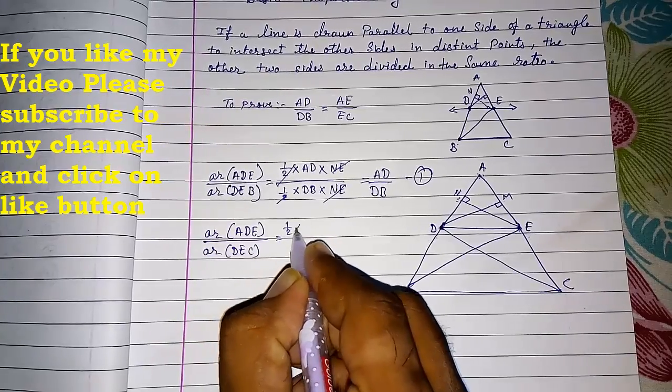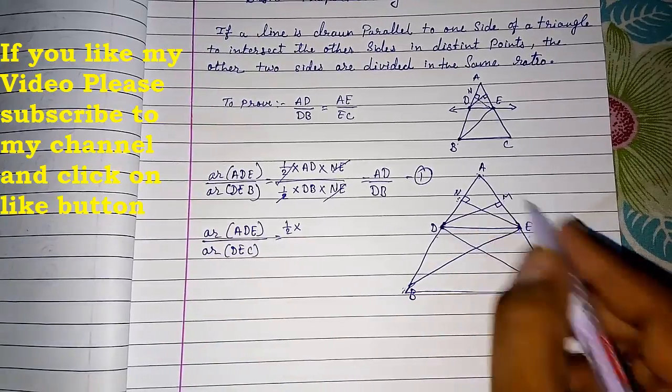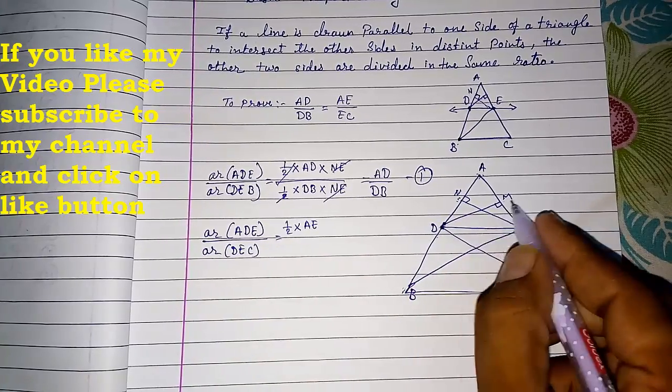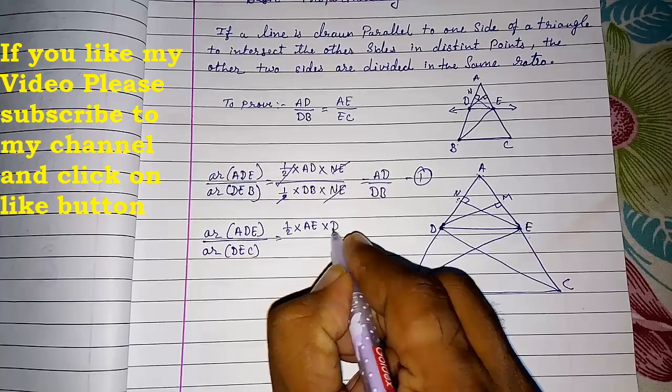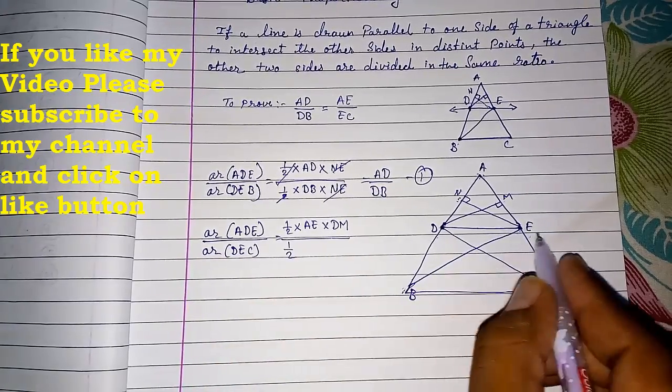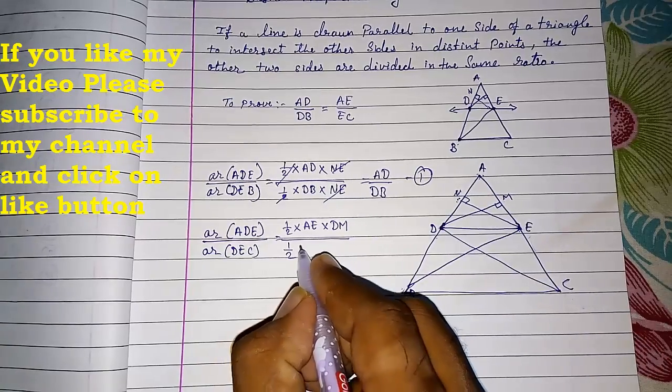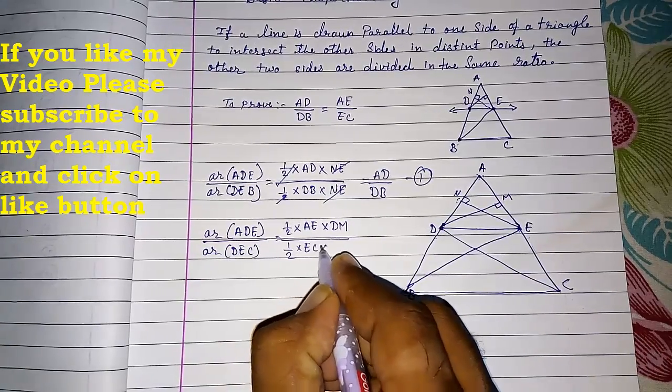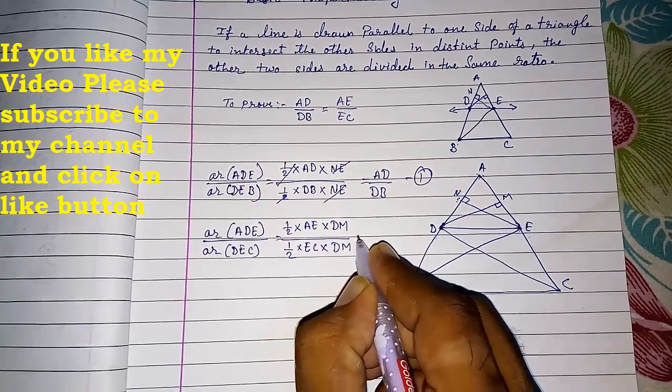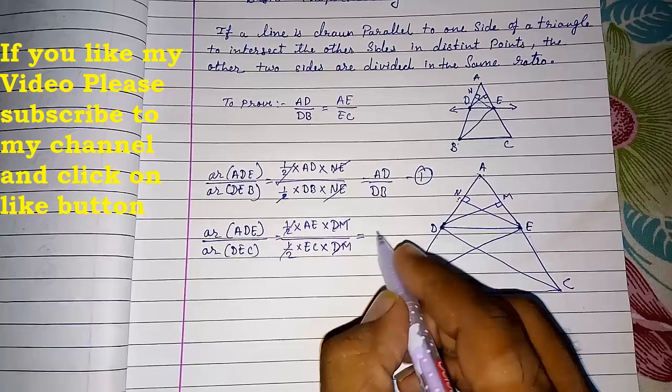Again half into base into height. Half, base will be AE. Now this side, height will be DM. Again half. Now in this triangle base will be EC and height will be same, only DM. Half cancel, DM cancel. We will get AE by EC. This is number two.